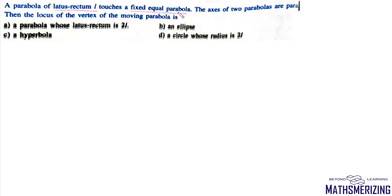The question is: a parabola of latus rectum L touches a fixed equal parabola. The axes of the two parabolas are parallel. Find the locus of the vertex of the moving parabola.